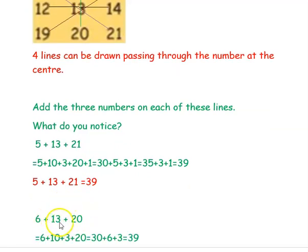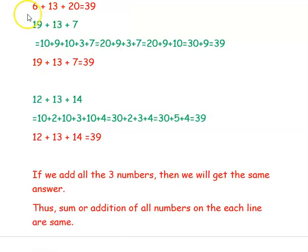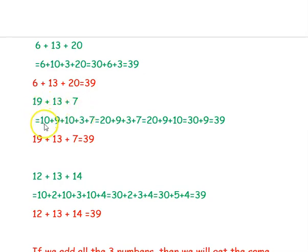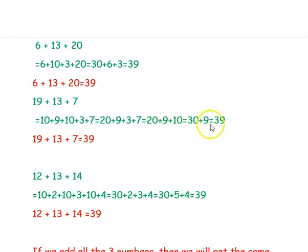The second line has 6 plus 13 plus 20. That is 30 plus 6 plus 3; 6 plus 3 is 9, so 30 plus 9 is 39. So 6 plus 13 plus 20 is 39. The next line passes through 19 plus 13 plus 7. Writing 19 as 10 plus 9, and 13 as 10 plus 3: 10 plus 10 is 20, plus 9 plus 3 plus 7; 3 plus 7 is 10, so 20 plus 10 is 30, plus 9 is 39.